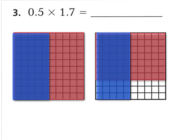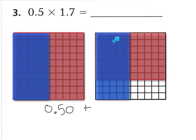Now you can see I've shaded in 5 tenths of both pieces. Whatever you see overlapping is going to be the product — whatever you see doubled up. I can see 1, 2, 3, 4, 5 tenths, also known as 50 hundredths. I'll write 50 hundredths below this, also known as 5 tenths. Now counting what's doubled up on the next piece: 5, 10, 15, 20, 25, 30, 35 hundredths. So 50 hundredths plus 35 hundredths — if you said 85 hundredths, you are correct.